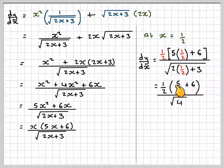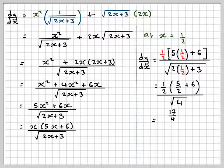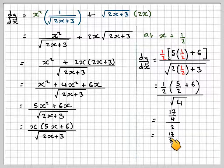2 times a half is 1 plus 3, so it's the square root of 4. We're going to have 2 times 6 is 12 plus 5, which is 17, and that will now be over 4 because it's 2 times 2, and the square root of 4 is 2. 17 over 4 divided by 2 becomes 17 over 8. Leave it as an improper fraction because that represents the gradient of the tangent.